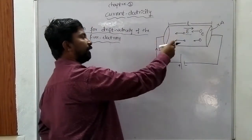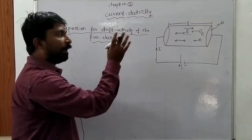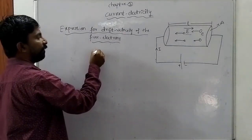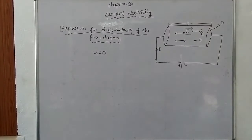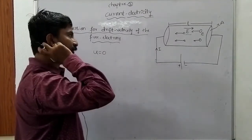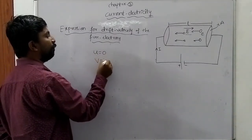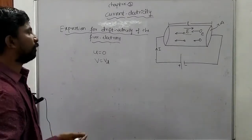Initially there is no electric field applied across the conductor, so the average velocity of the free electrons is zero: u = 0. Suppose an electric field is applied across the conductor — then the free electrons gain velocity due to the electric field. Therefore v = vd.